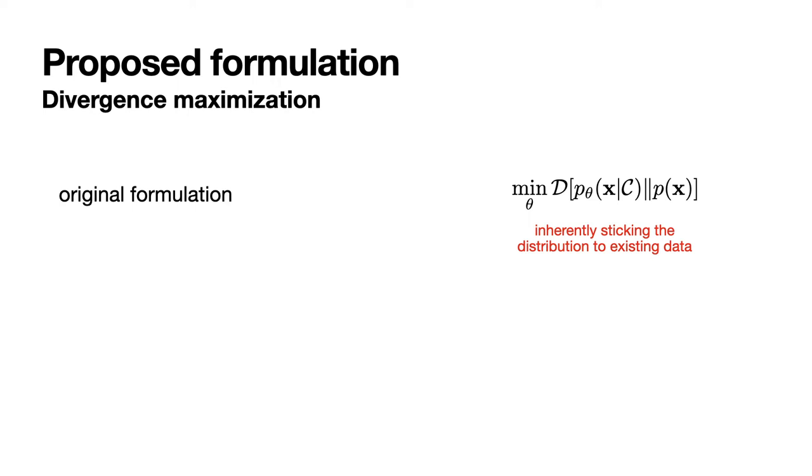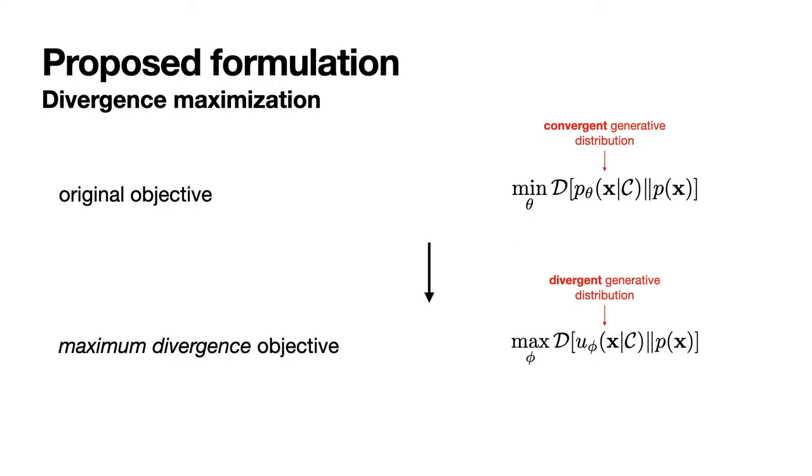We saw that the original formulation, based on the minimization of the divergence D, enforces the models to stick to the original data distribution. Reversely, let us think about the effect of inverting this objective and rather try to maximize the divergence between generations and the original data. We will call this new objective the divergence maximization objective.